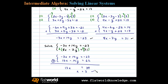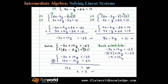Dividing both sides by 13, we have x equals 3. Now we begin the process of back substitution. We'll substitute x equals 3 into the first equation of the reduced system: negative 9 plus 14y equals negative 23. Adding 9 to both sides gives 14y equals negative 14, and dividing by 14, y equals negative 1.